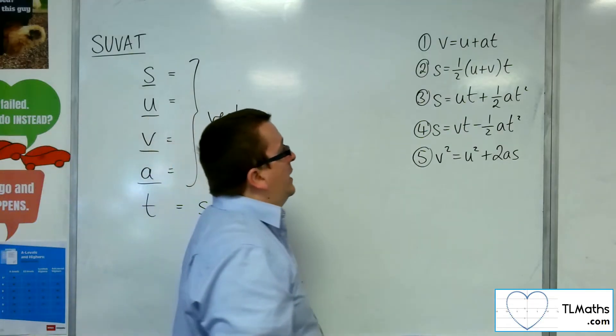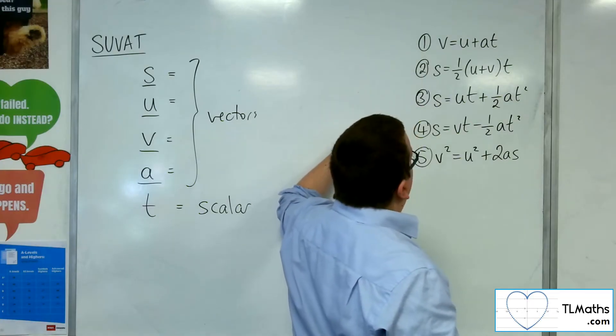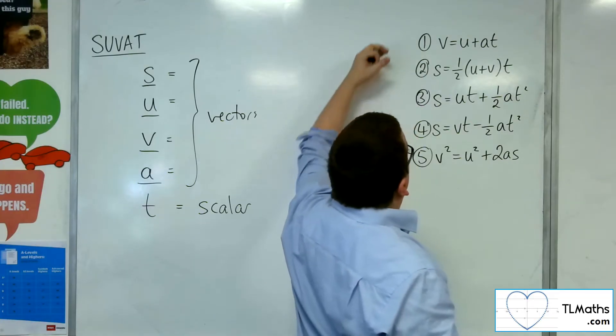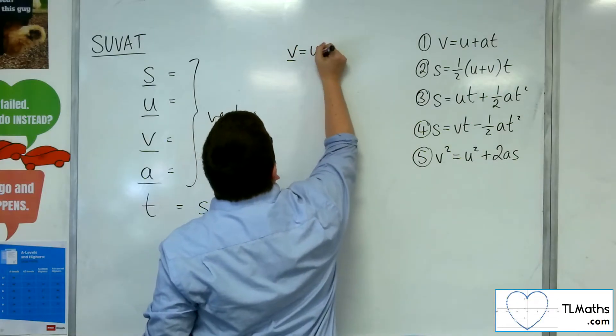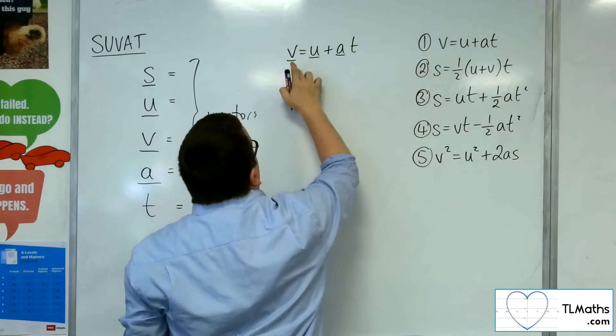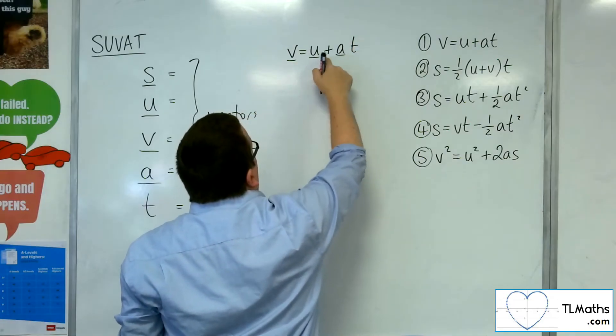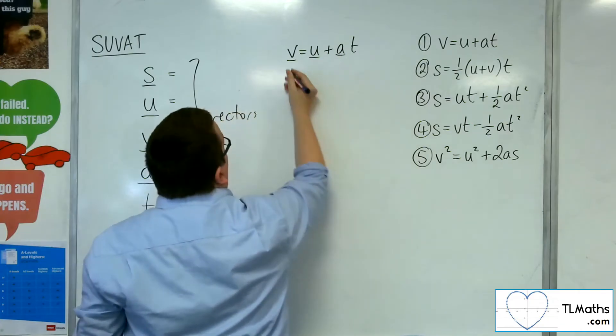Now, when I'm looking through this list, which ones can we still use? So V equals U plus AT, we can certainly still use, because we've got one vector equal to one vector plus a multiple of another vector. So that works out.